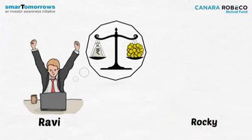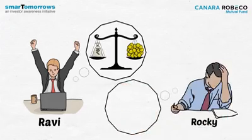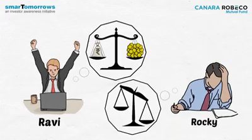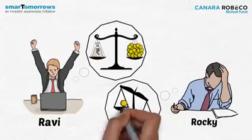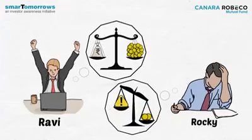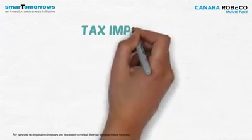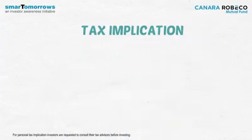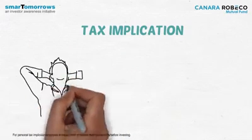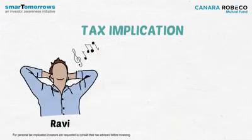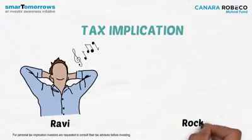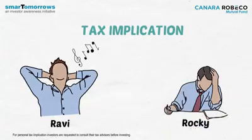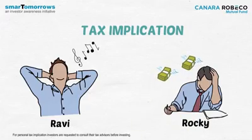But Rocky must constantly keep a tab on the asset allocation and rebalance regularly. Chances are that he might miss it at times. Every time rebalancing happens, there is no tax implication for Ravi at all. However, Rocky has to constantly keep tab of all the transactions, and there is a tax implication depending upon the asset class he is selling and its holding period.